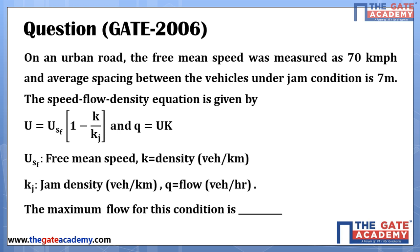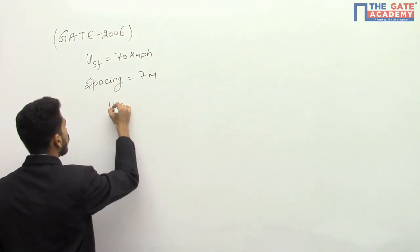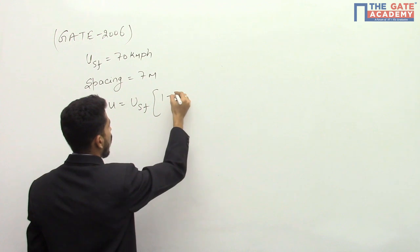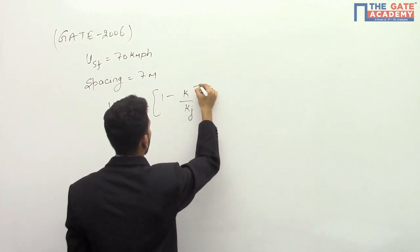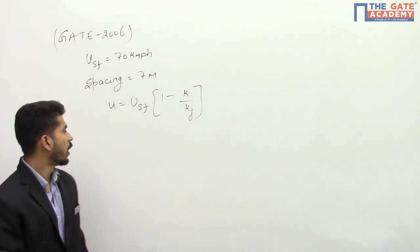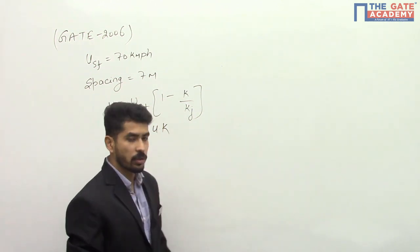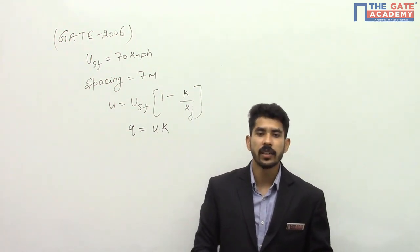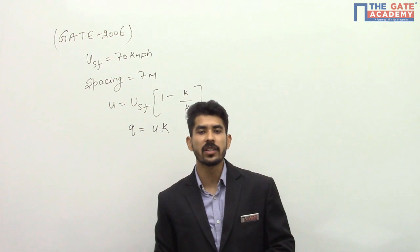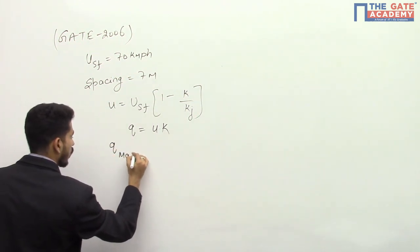The speed flow density equation is given by u equal to usf times 1 minus k divided by kj, and q equal to u into k. This was given to us. He is asking the maximum flow for this condition. So he is asking us to calculate what is the q max.